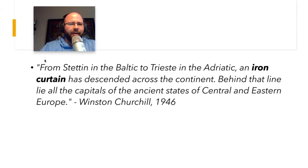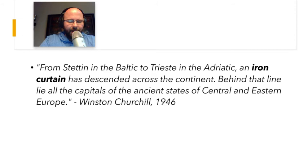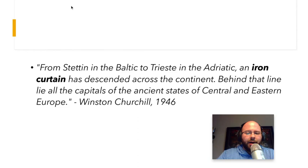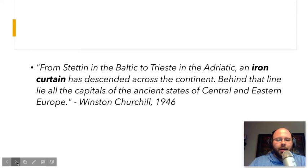Churchill gives his Iron Curtain speech. Here's an excerpt — probably the most famous part. He says: 'From Stettin in the Baltic to Trieste in the Adriatic, an Iron Curtain has descended across the continent. Behind that line lie all the capitals of the ancient states of Central and Eastern Europe.' What he's talking about is the edge of communism — everything behind that Iron Curtain is being run very differently than in the West, in the capitalist democracies. He views the loss of the Western idea behind this Iron Curtain as a very negative thing, as do most people in the West at that time.